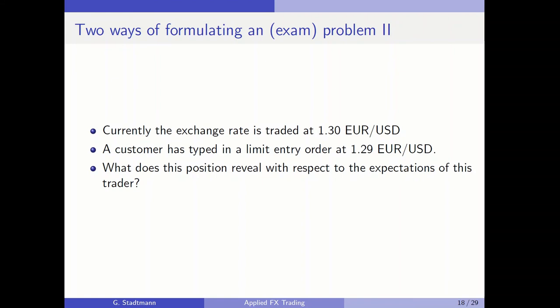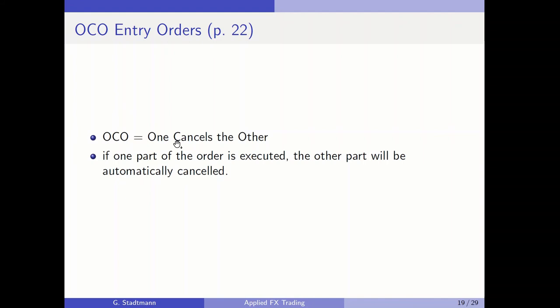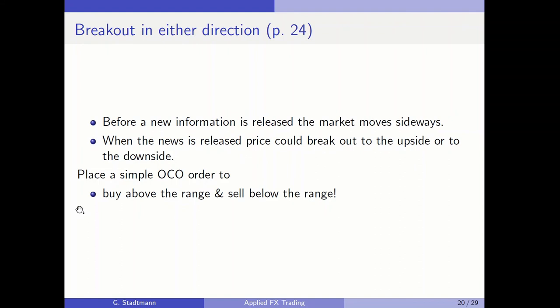An OKO — one cancels the other — order implies that if one part of the order is executed, the other part is automatically cancelled. This order is used when you expect a breakout in either direction. Before a news release, the market moves sideways; we expect the price could break to the upside or downside, so we place two orders — one to buy above the range and one to sell below — and if either is filled, the other is cancelled automatically.